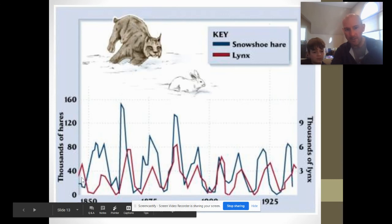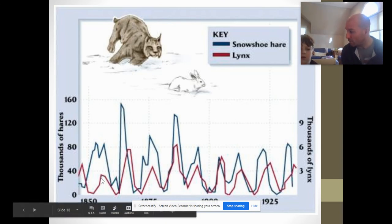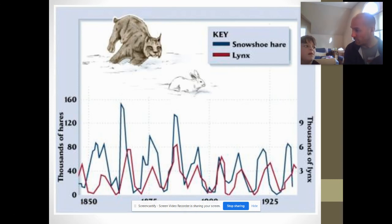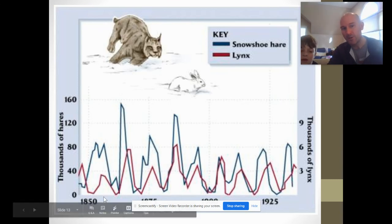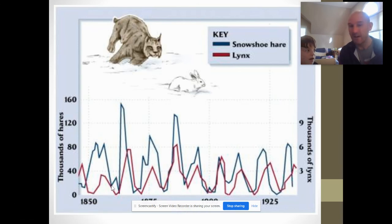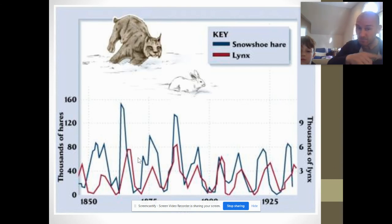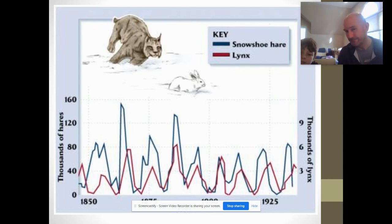When the lynx population is low, the rabbit population goes up because there are fewer predators eating them. When the rabbit population goes up, there's more food for the predators, so the lynx population goes up too. But when the lynx population goes up, more rabbits are eaten, so the rabbit population goes down. When the rabbit population goes down, there's not enough food and many lynx die off. This is a cyclical predator-prey relationship — as prey population goes up, predator population follows; as predator population goes up, more prey are killed.